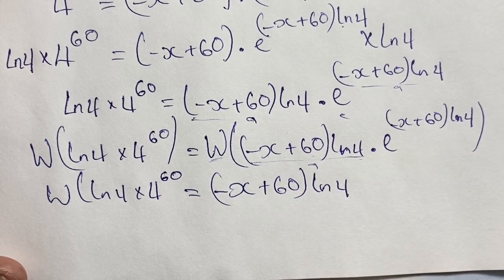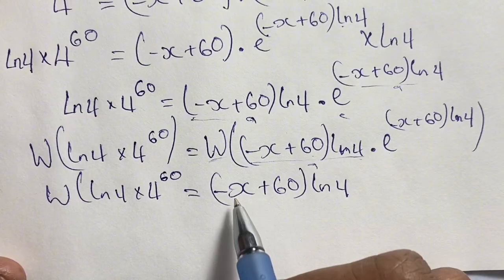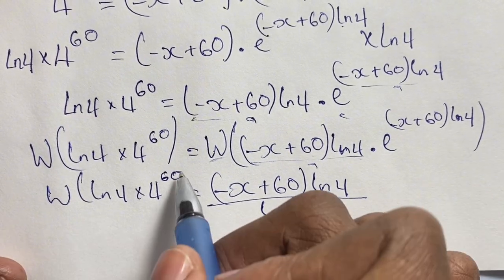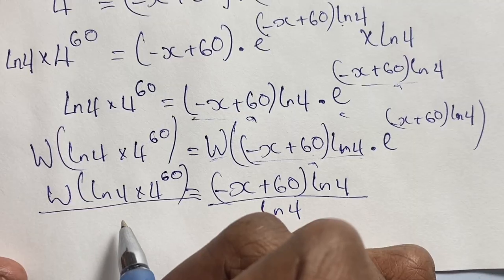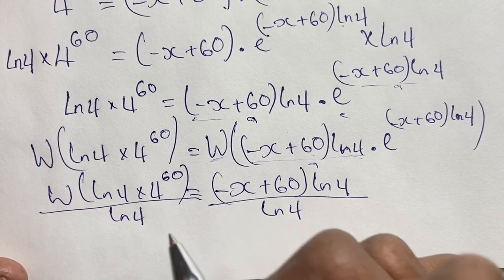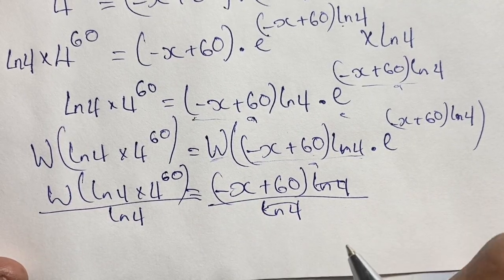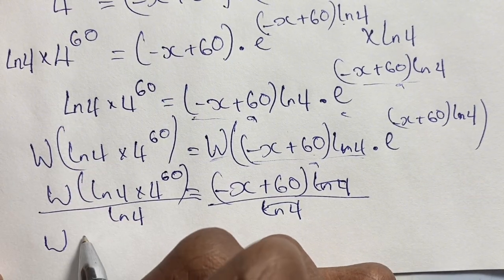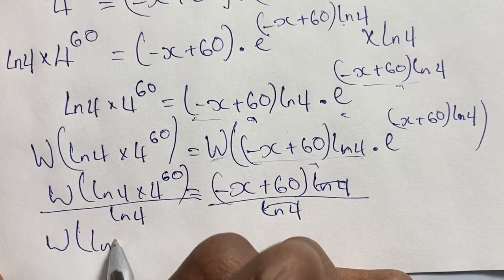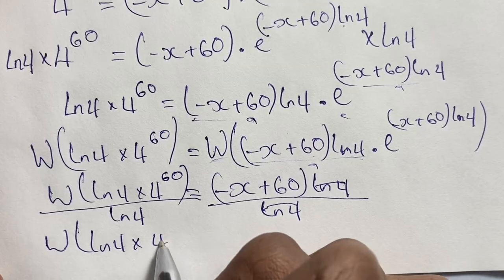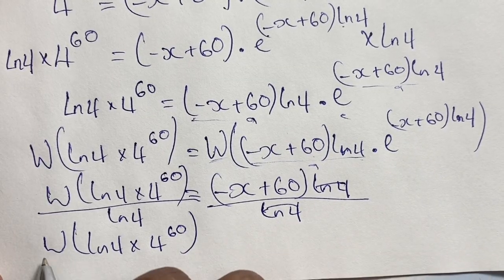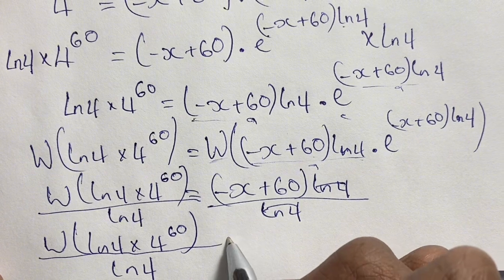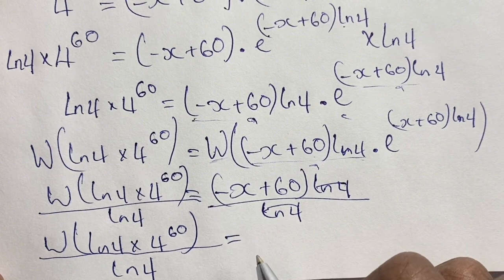From here we can solve for x by dividing both sides by ln 4. The ln 4 terms cancel on the right, giving us W of ln 4 times 4 to the power of 60, all over ln 4, equals negative x plus 60.